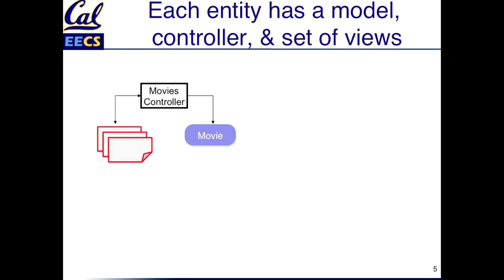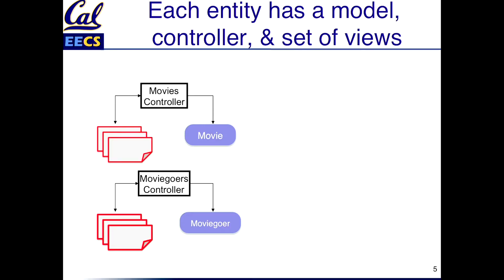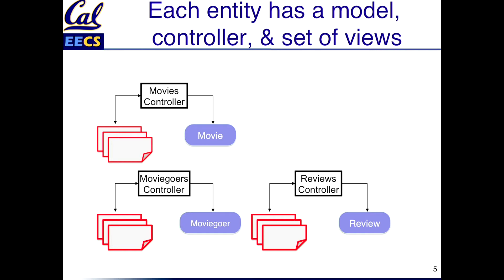To show how model view controller apps work: each entity has a model, a controller, and a set of views. For example, in our hypothetical Rotten Potatoes app, which we're going to be using to illustrate how Rails works, there's a notion of movies — a kind of thing that the app manipulates. There are moviegoers — information about people who watch movies. We might even have information about reviews that people write about movies. Each one of those types of entities has its own model, its own controller, and its own set of views associated with it.